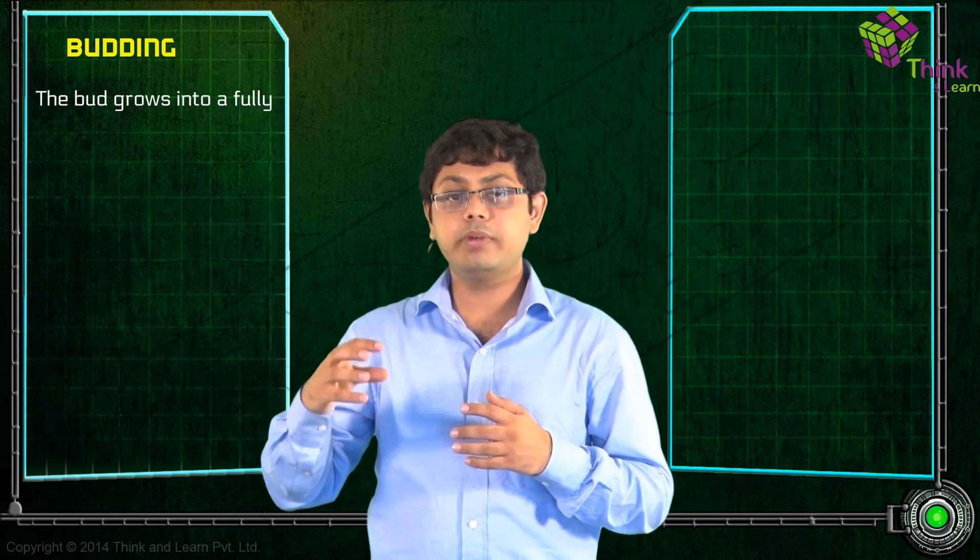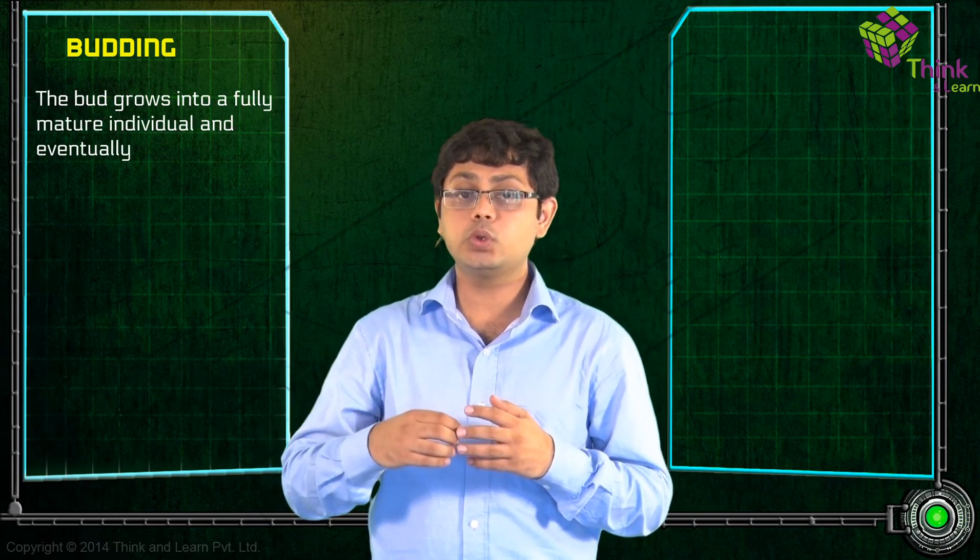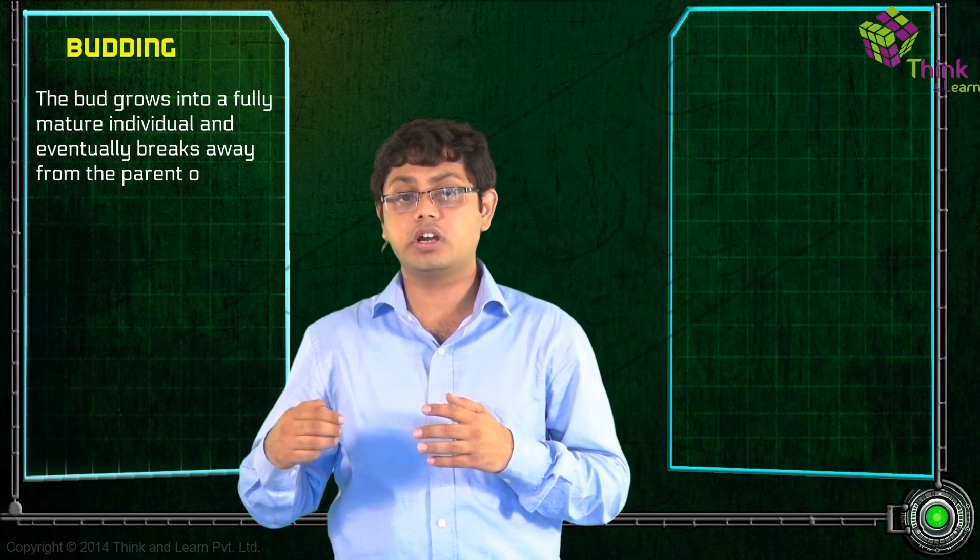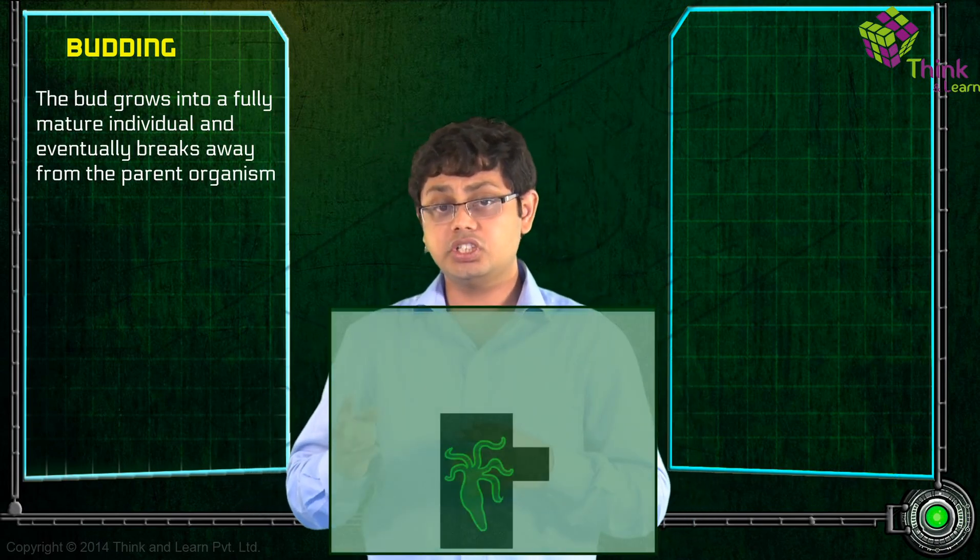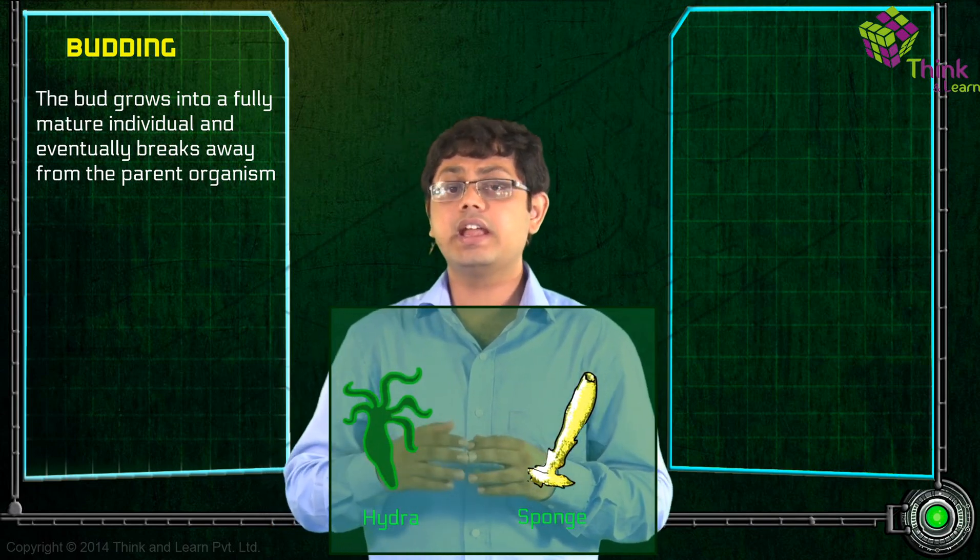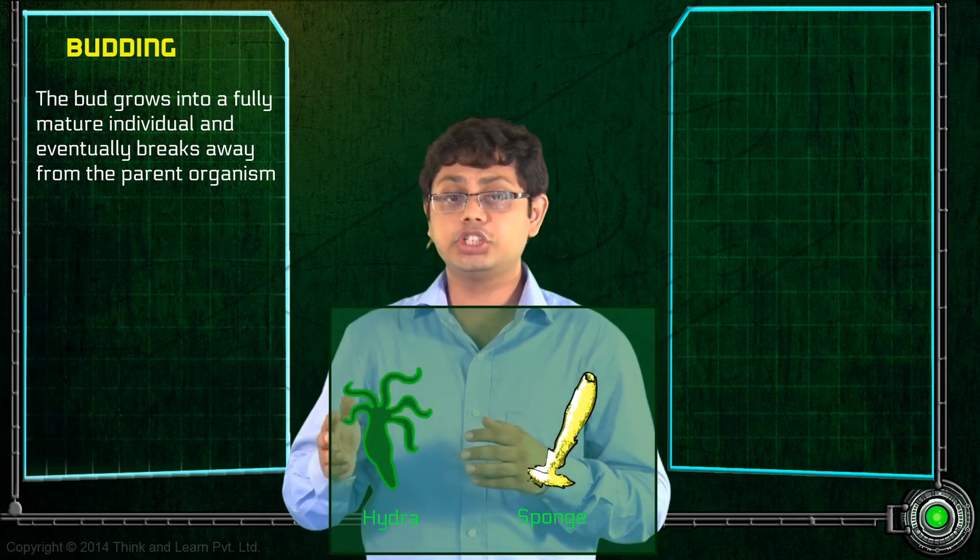The bud grows into a fully mature individual and eventually breaks away from the parent organism. Since multicellular organisms such as hydra and sponges have only a few different cell types, they are able to reproduce asexually.